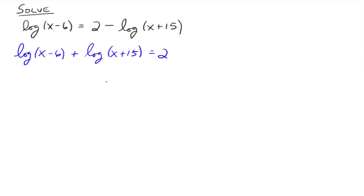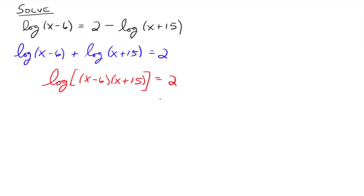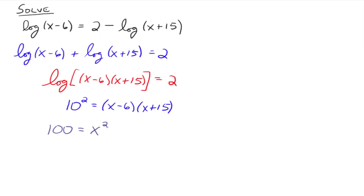Now we can use a property of logarithms — since we have the same base and we're adding — to write this as one logarithm: log of (x minus 6)(x plus 15) equals 2. Now we can apply the definition of the logarithm. The base is a common log, so it's 10, giving us 10 squared equals x minus 6 times x plus 15. So 100 equals x squared plus 9x minus 90.